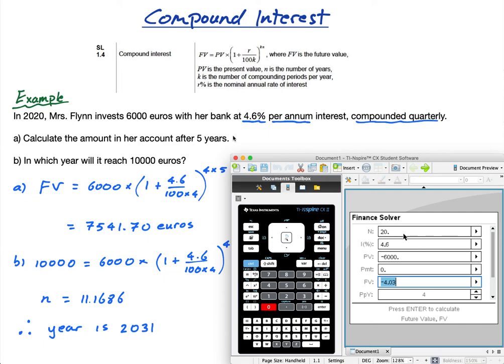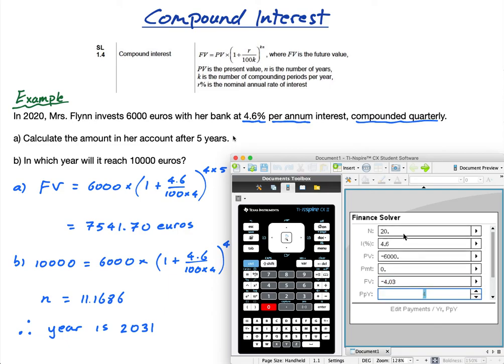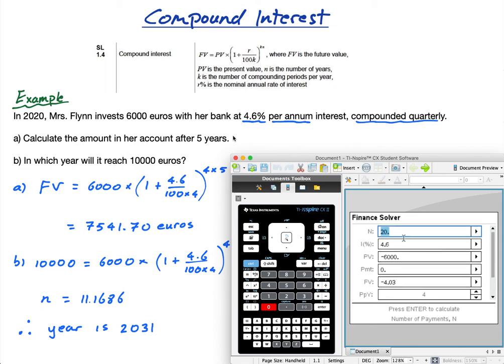The future value, leave that—I don't know what that is yet. I'm going to press enter and calculate that. The payments per year is 4 because it's happening quarterly, and the compounding periods per year is also 4 because it's happening quarterly. Now if I go to future value and press enter, there I go, I get 7,541.69.